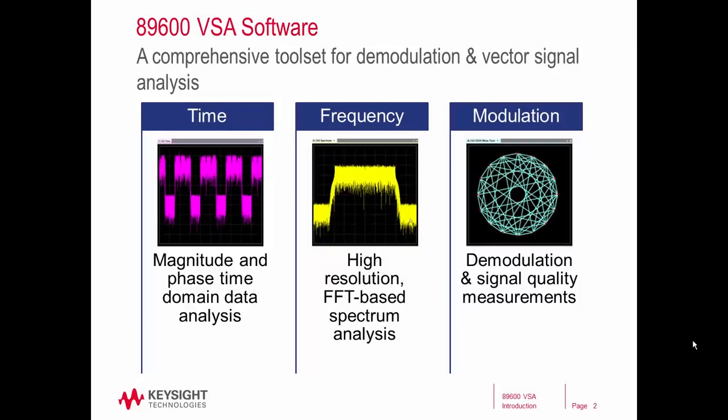First, let's start out with a brief overview of what is the 89600 VSA software. At a basic level, the VSA software is a comprehensive toolset to allow you to demodulate and analyze your signal. It performs vector signal analysis, which means you're able to analyze and view the signal in the time, frequency, and modulation domains.